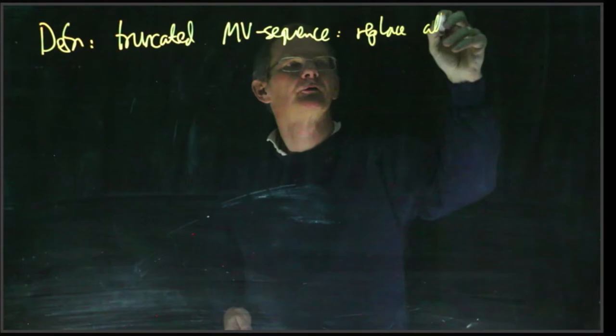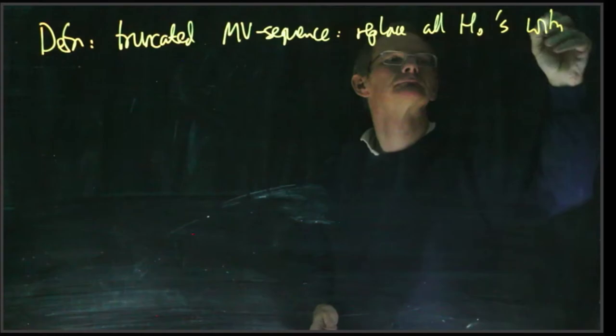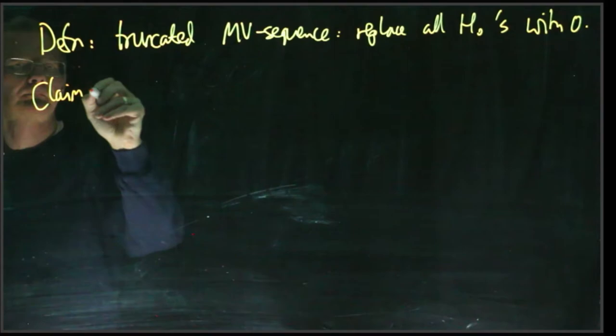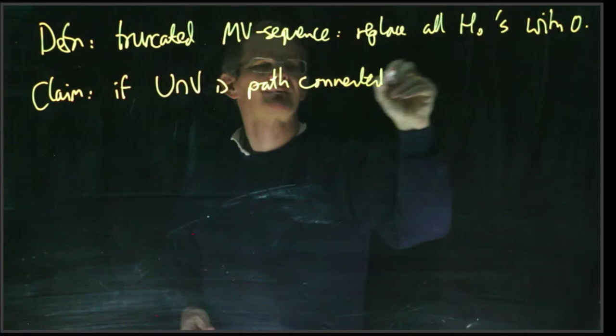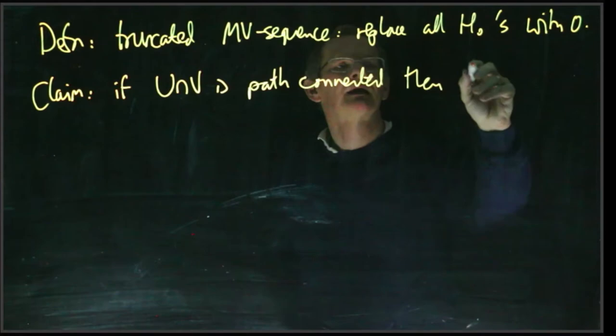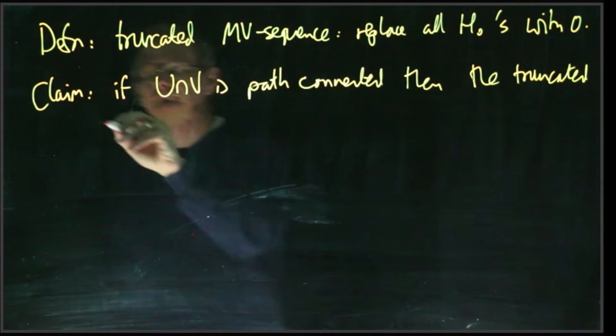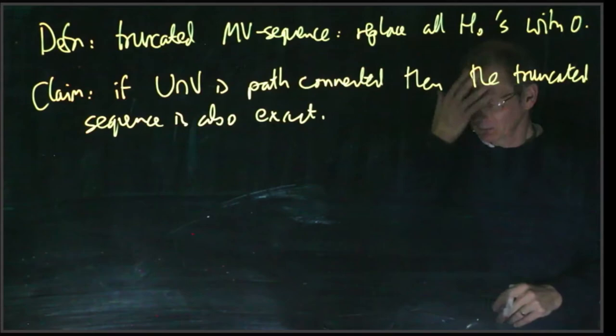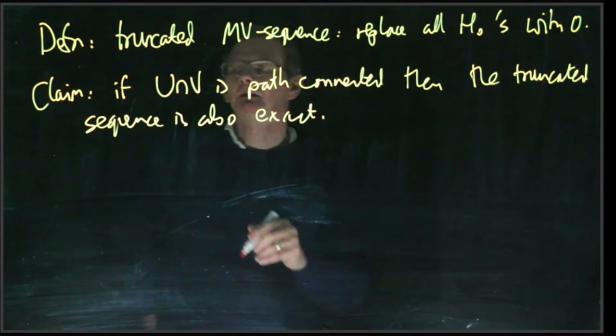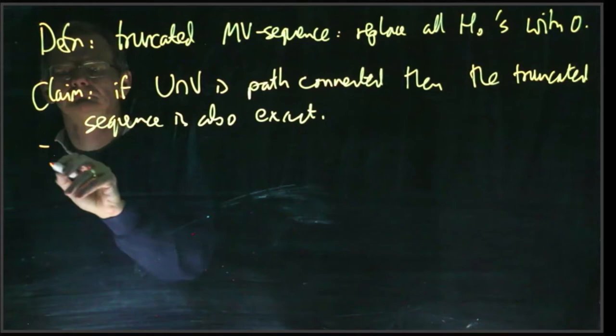It's just what I get by replacing all H_0s with 0. And I claim that if U intersect V is path connected, then the truncated sequence is also exact.